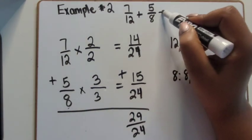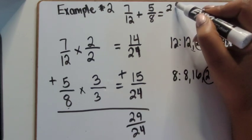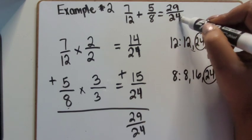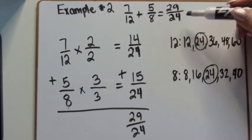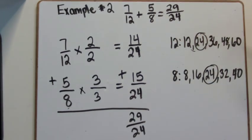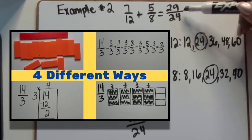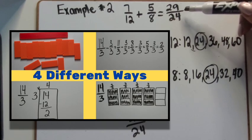The sum for these fractions results in a fraction greater than one, also known as an improper fraction. If you or your students don't know how to convert fractions greater than one into mixed numbers, I have a video showing four different ways to do that conversion, so check those out.